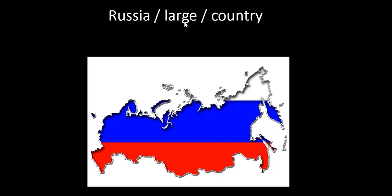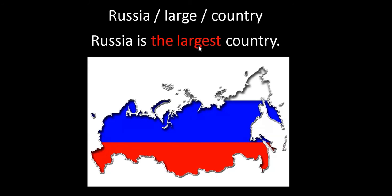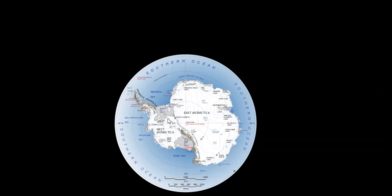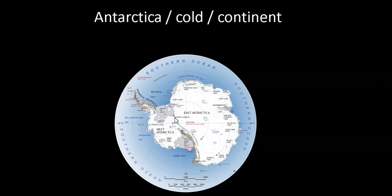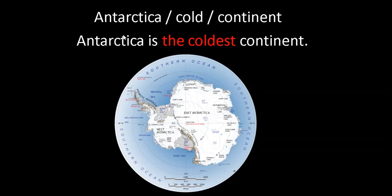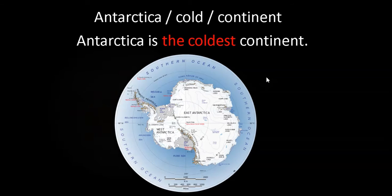Which country is this? It is Russia. Russia is large, so: Russia is the largest country — the largest country in the whole world. And this very cold place is Antarctica. With a superlative: Antarctica is the coldest continent.